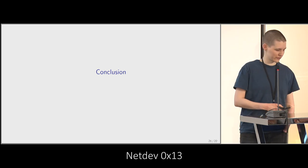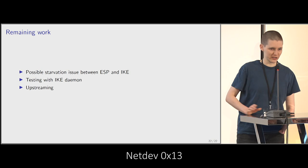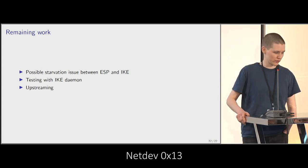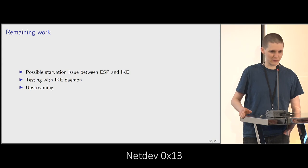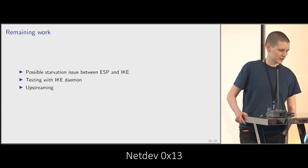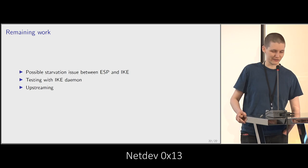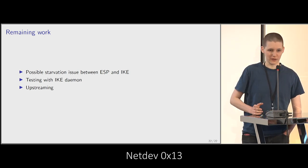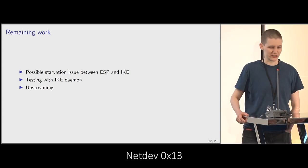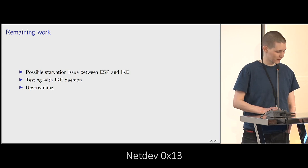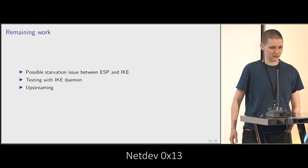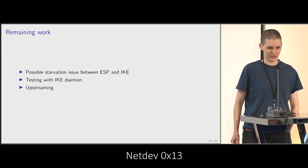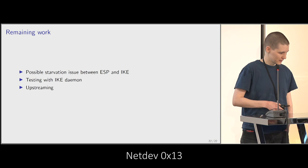A few words to finish — there's a bit of remaining work. At the IPsec workshop earlier this week, we discussed a possible starvation issue: if you have ESP flooding the socket, your IKE messages could get starved. I haven't tested that yet, so I don't have a solution if it happens. I also haven't done any testing with the IKE daemon because the implementations were not public yet, but that's something we'll do as soon as we share each other's code. If that testing goes well, I'll post it upstream on netdev.